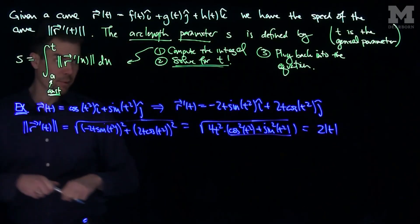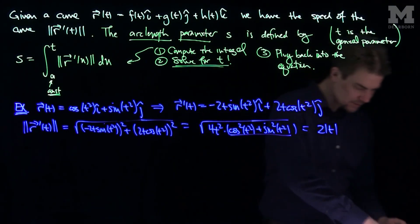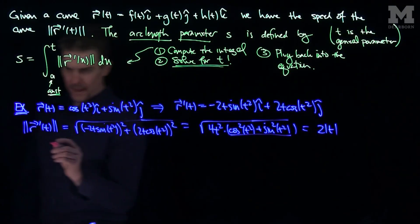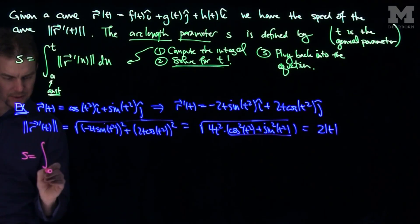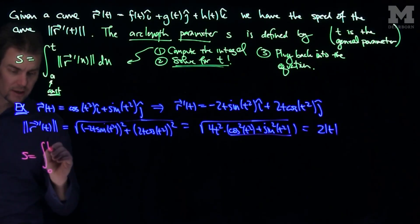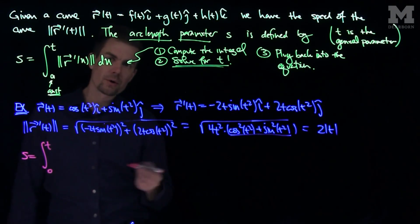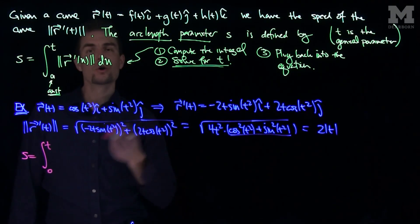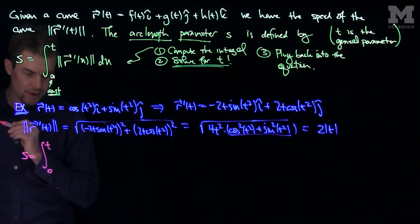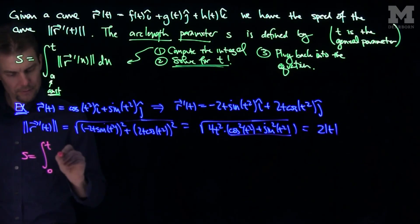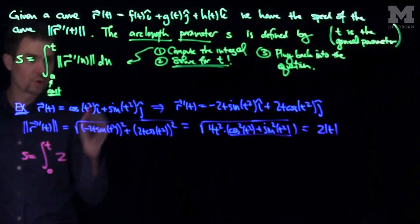So the arc length parameter s will be the integral from a constant, I'll choose that constant to be 0 to make my calculation easier, to t. If you don't choose 0 or the right lower limit, you can go back and change it to make your formula look nicer. It won't change the answer at all. So the integral from 0 to t of the speed of the curve, so I'm going to put a 2.